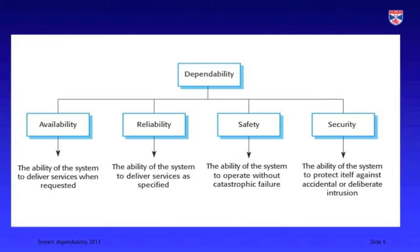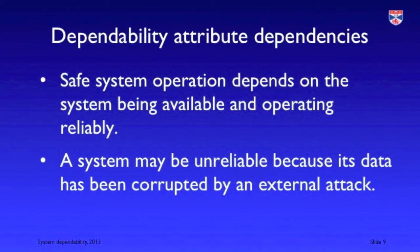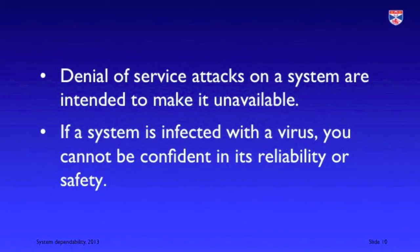These attributes are not independent, which is one reason why we put them together under the general heading of dependability. Safe system operation depends on reliable behaviour, and in many cases the system has to be available otherwise there are safety consequences. If a system is insecure and is penetrated and corrupted by an attack, even if that system was previously safe we can no longer be confident that it remains safe. A common security attack is a denial of service attack, which aims to make the system unavailable. An attack that corrupts data may also cause unreliability in the system's operation. We have to consider all of these properties — availability, reliability, safety, and security — together rather than as completely separate properties.